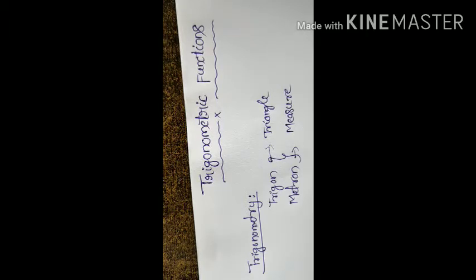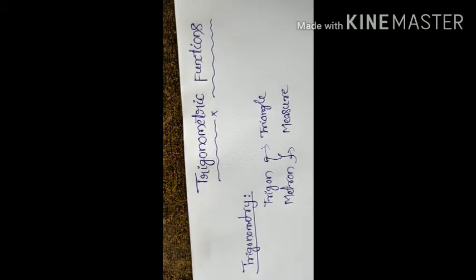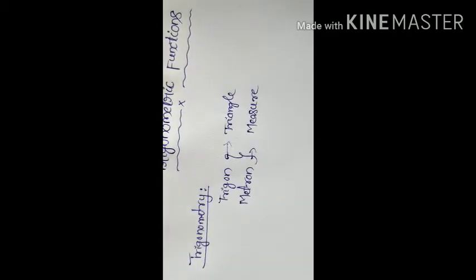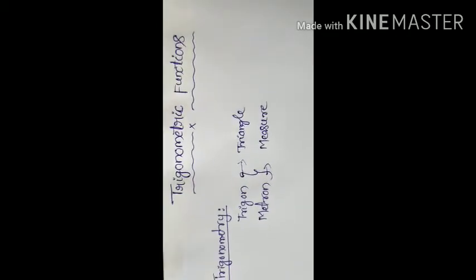Trigonometry was studied by sea captains for navigation, surveyors to map out new lands, by engineers and others. Currently, trigonometry is used in many areas such as the science of seismology, designing electric circuits, describing the state of an atom, predicting the heights of tides in the ocean, analyzing a musical tone, and many other areas.